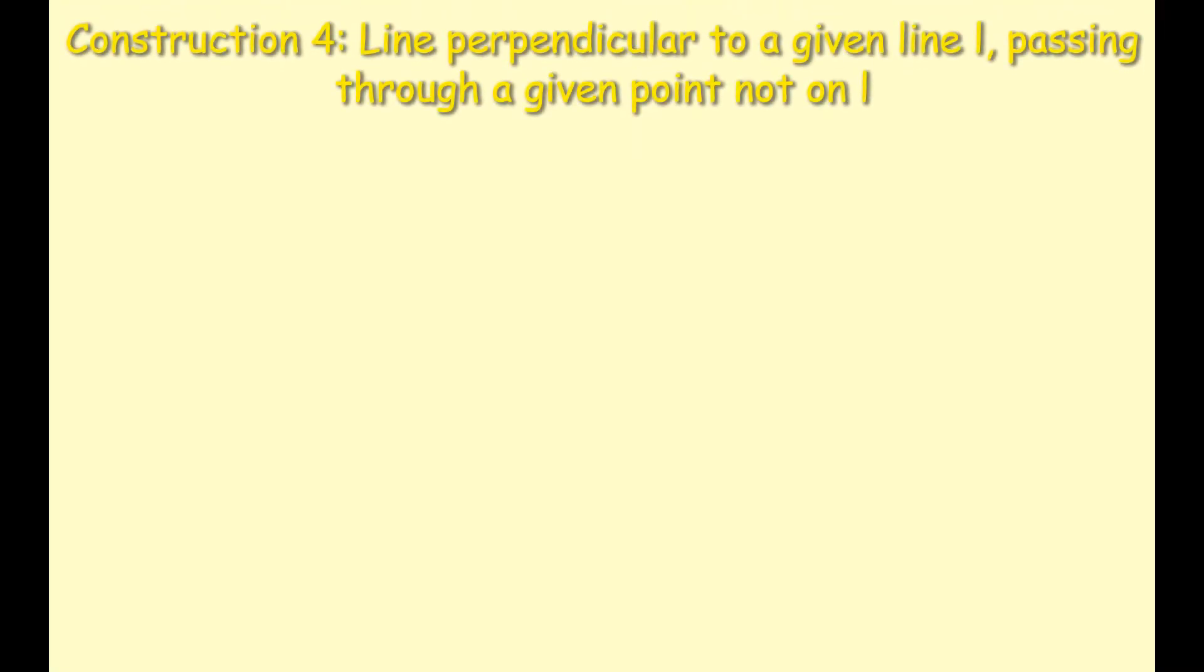In this video we're looking at Construction 4, which states that a line perpendicular to a given line L passing through a given point not on the line L. So first thing we want to do is we want to construct that line L.